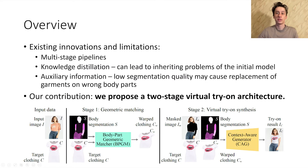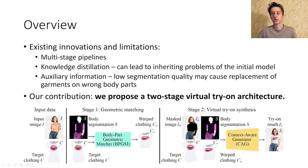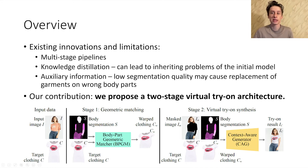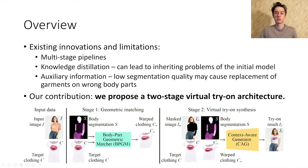Due to advancements in computer vision and generative neural networks, the field has seen considerable progress in recent years. Modern methods rely on multiple innovations, like multi-stage pipelines, knowledge distillation, and use of auxiliary input data like pose keypoints and clothing segmentations. While each of these approaches improve image quality, we find that they still have their problems.